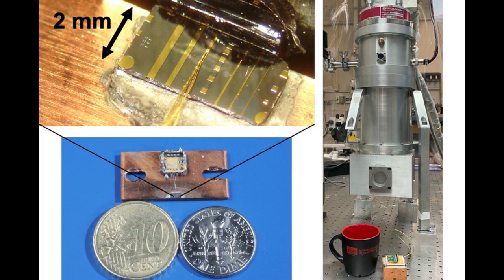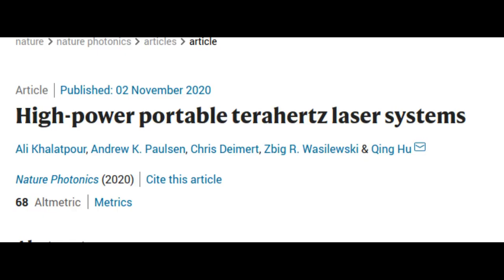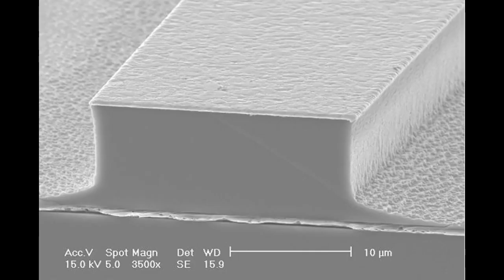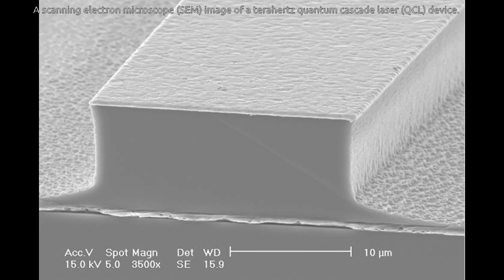In a paper published in the journal Nature Photonics, MIT researchers report that their terahertz quantum cascade laser can function at temperatures of up to 250 Kelvin, meaning that only a compact portable cooler is required.